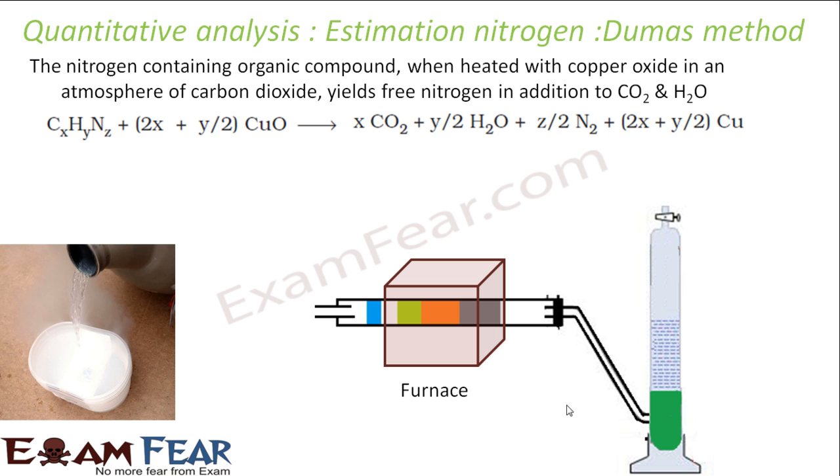Let's understand the way to estimate nitrogen by Dumas method. Actually this is used to estimate the purity of milk also because protein is made of nitrogen and we generally use this method to find how pure milk is. So this is one way, Dumas method. In fact there are two methods. I will discuss the other method also. This is a method to find or determine the composition or estimated composition of nitrogen.